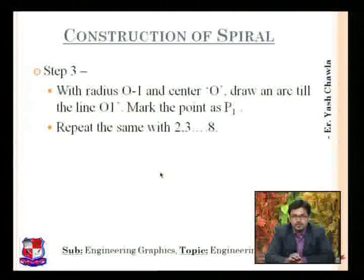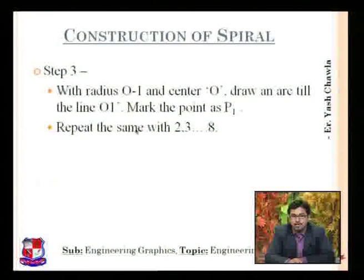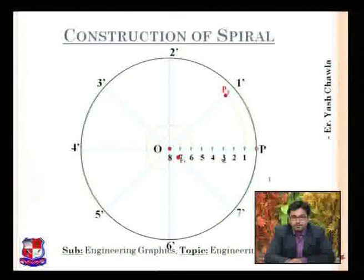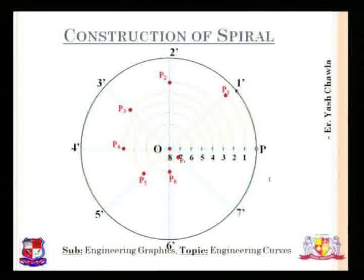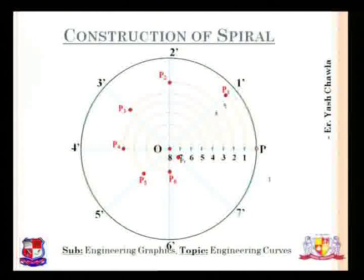Next step: with radius equal to O1 and O as center, we draw an arc till line O1-dash and mark the point as P1. What we do is take the distance from O to 1, draw that arc up to the line passing through radius O to 1-dash. So P1-dash is the point we have got.